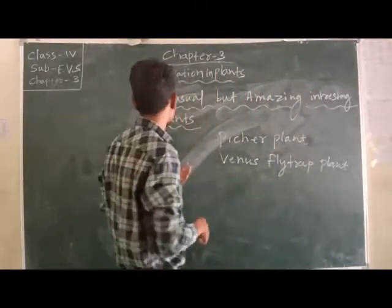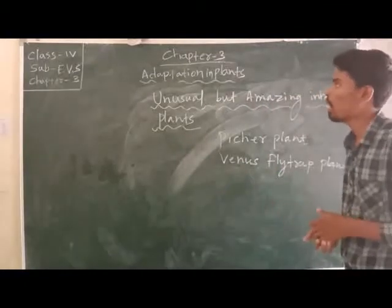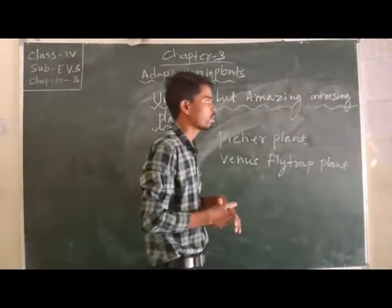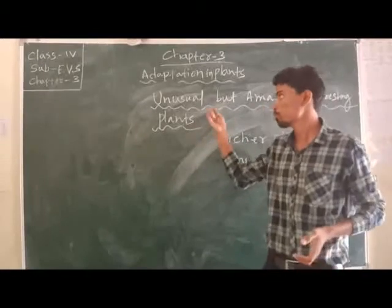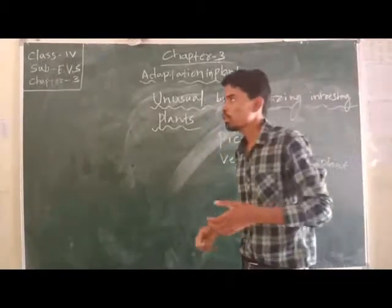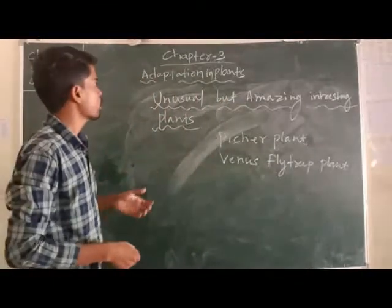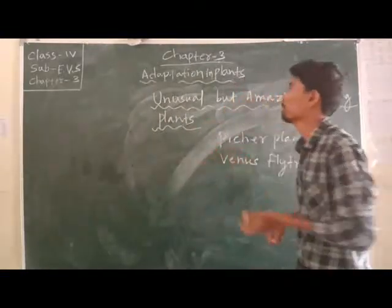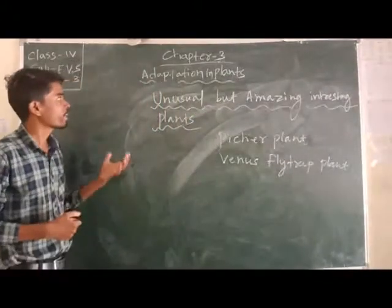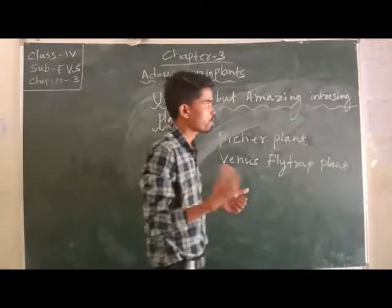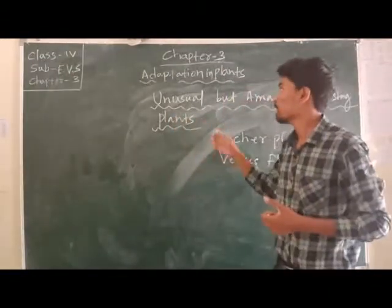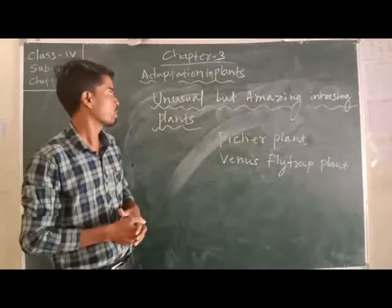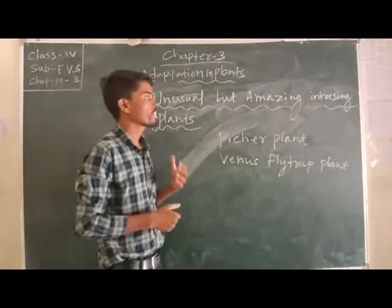So your third chapter is completed. Next class we will discuss chapter number 4. Now some points to be remembered. In this chapter we have learned about terrestrial plants, aquatic plants, and the meaning of adaptation. Adaptation is the process of adjustment in a particular environment. Terrestrial plants grow on land including mountains and desert areas, and aquatic plants grow in water.